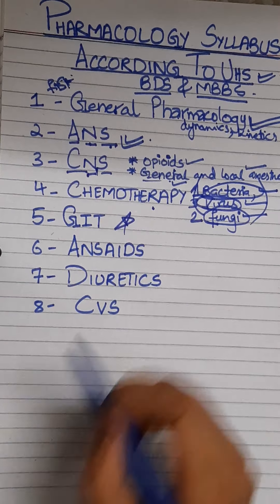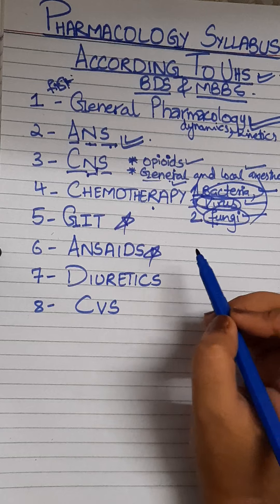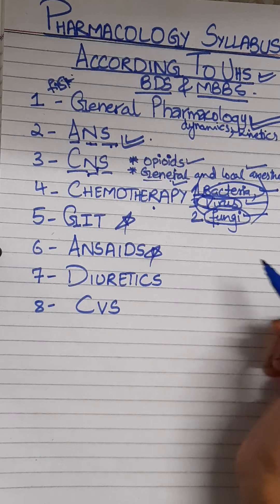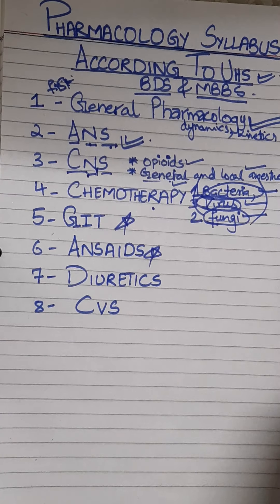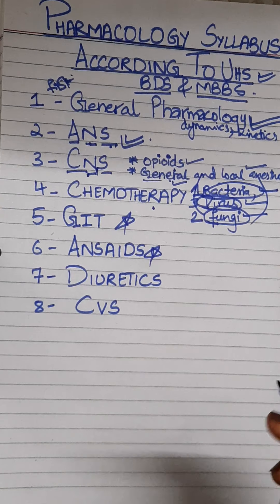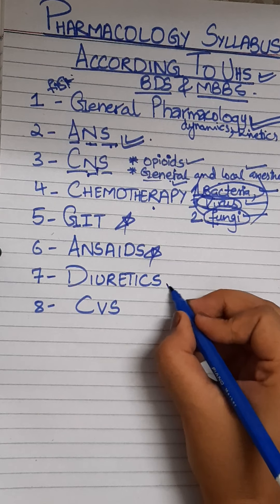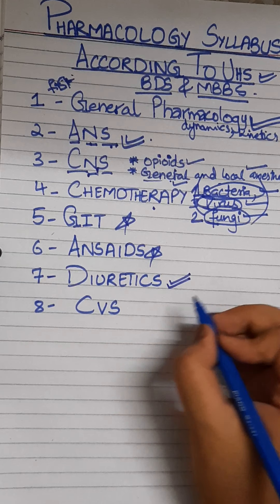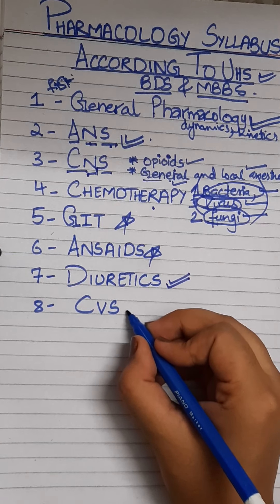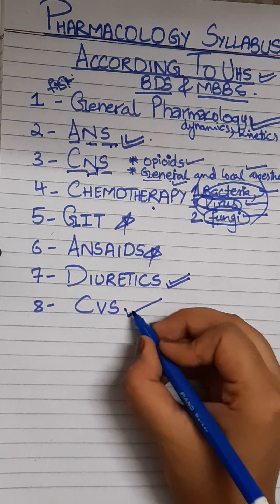Then comes GIT, which is also very important. Then NSAIDs — being a dentist, NSAIDs are very important for you and will be beneficial in oral medicine as well.